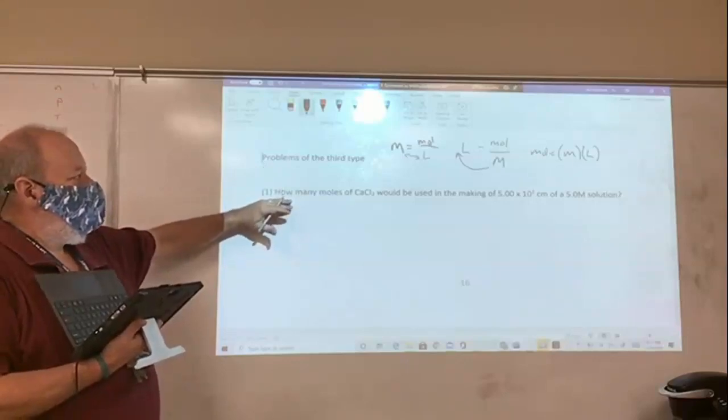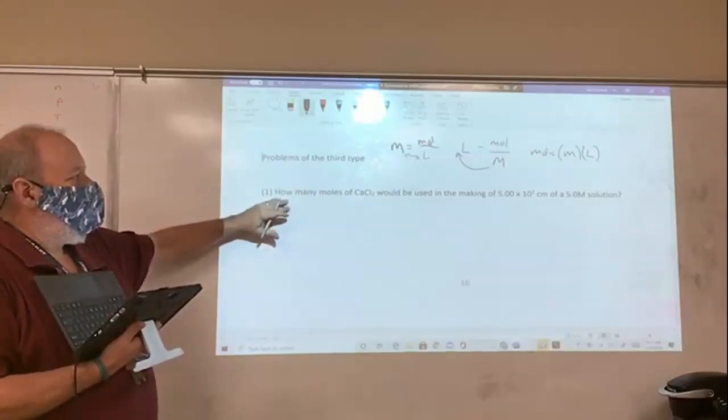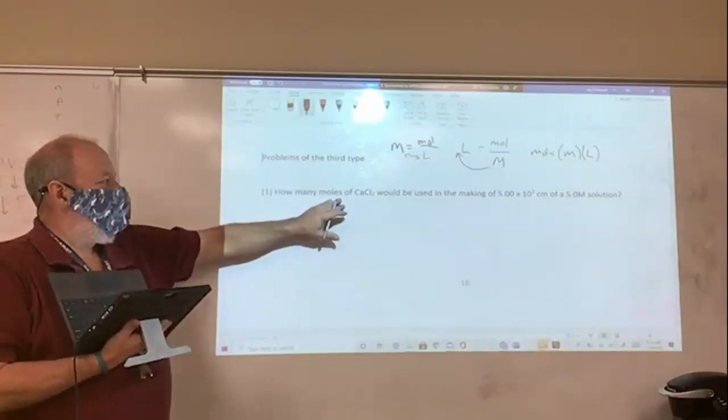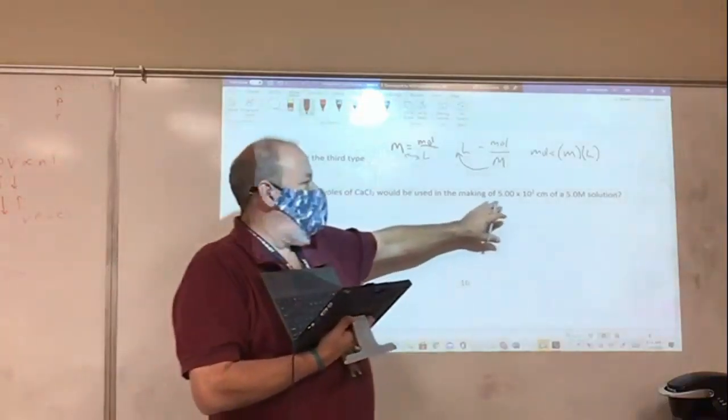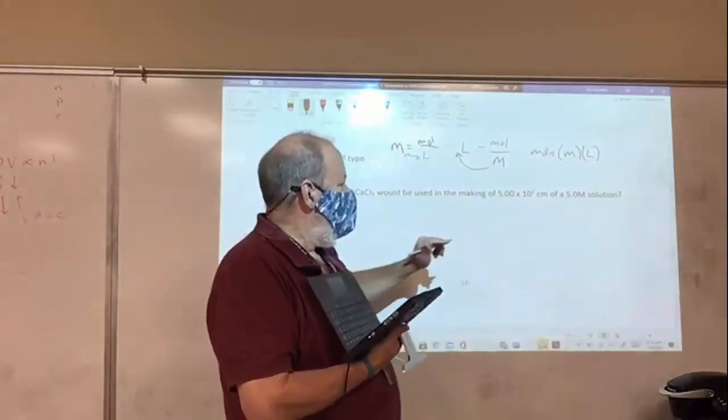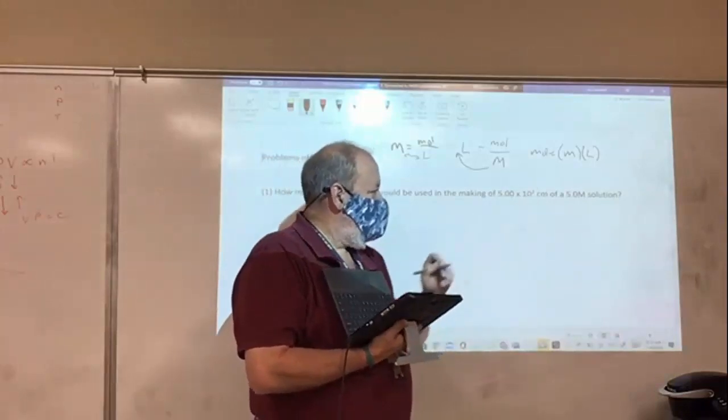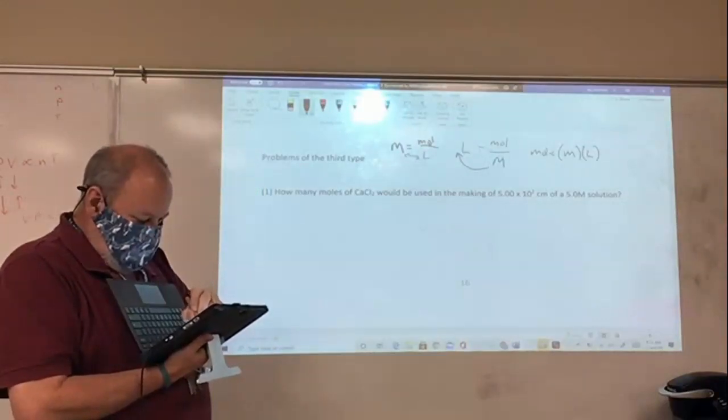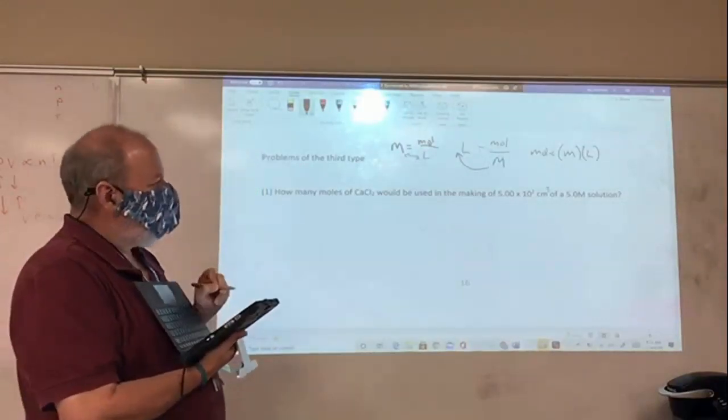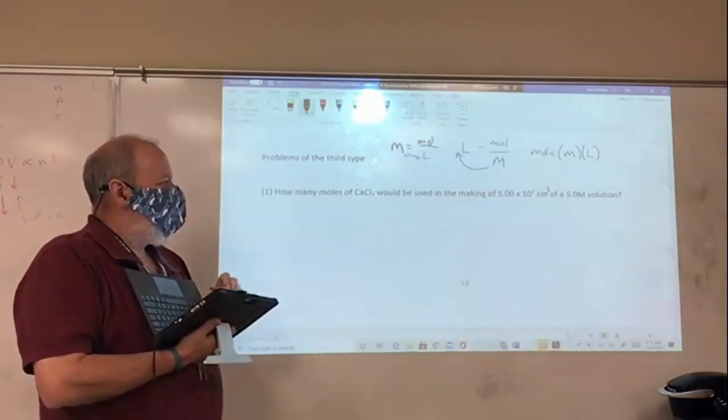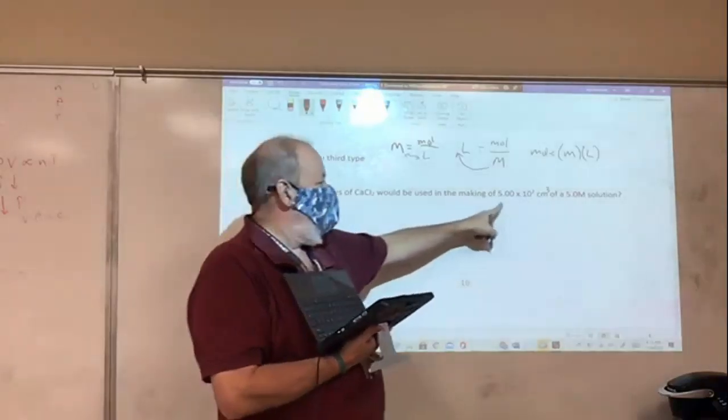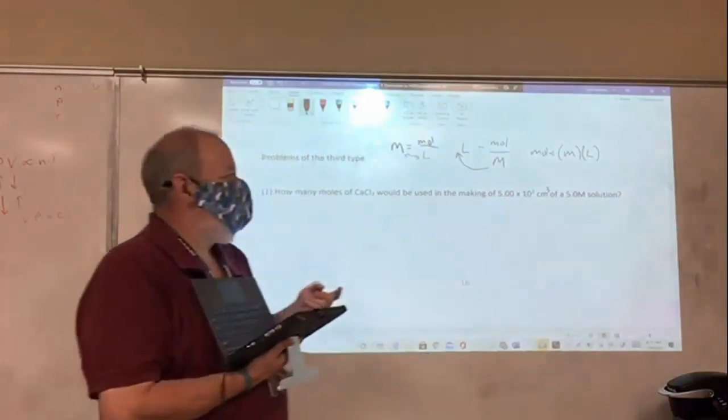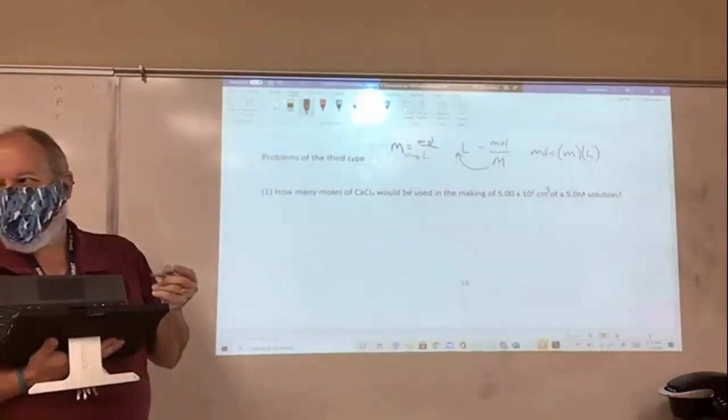And we said that the way that we want to do this is have a strategy where I first ask the question, do I know a formula that will provide me with the answer that I want? So in this type of a problem here, how many moles of calcium chloride would be used in the making of, and this should be cubic centimeters, I'm not sure where the cubic went, cubic centimeters of a five molar solution. And I threw a couple of little additional wrinkles in here. I used some scientific notation. What's five times 10 to the second actually equal? What's 10 to the second?